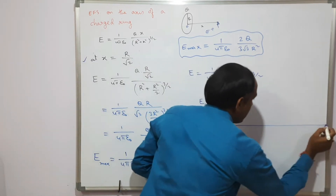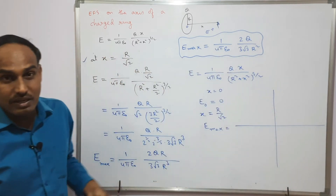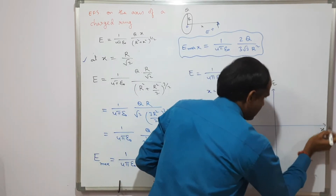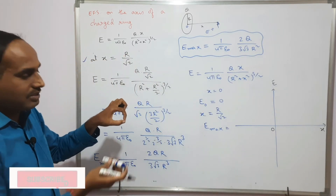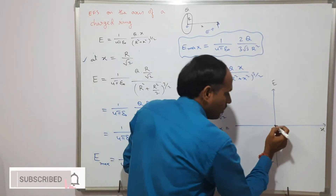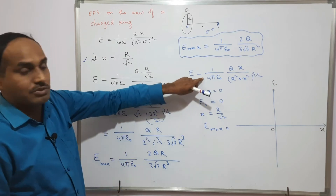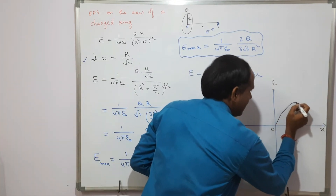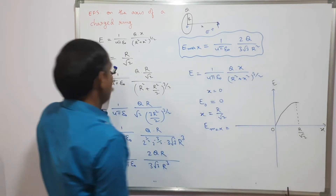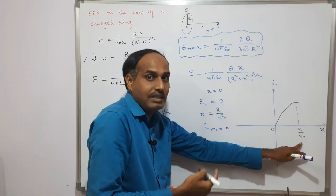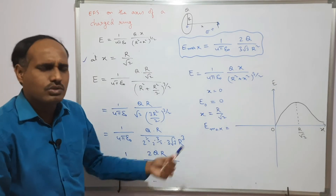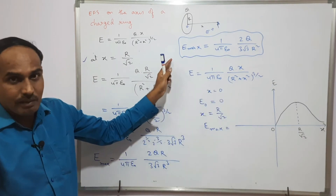If asked to show the variation of E with position graphically: taking E on the y-axis and distance on the x-axis, for a positively charged ring the electric field is directed outward. At the center E is zero, then it increases in a parabolic curve up to x = r/√2, after which E starts to decrease, eventually approaching zero far from the ring.